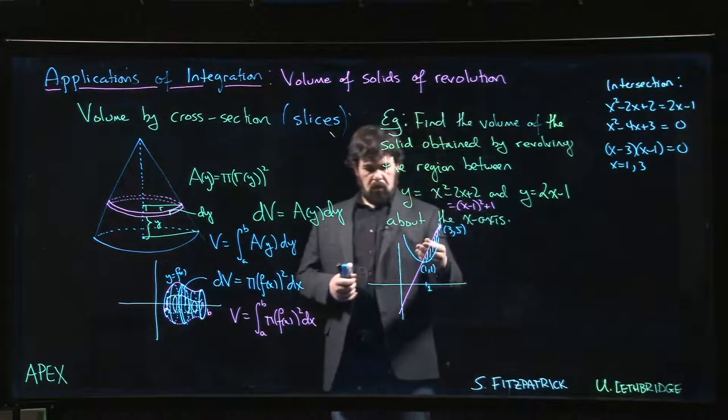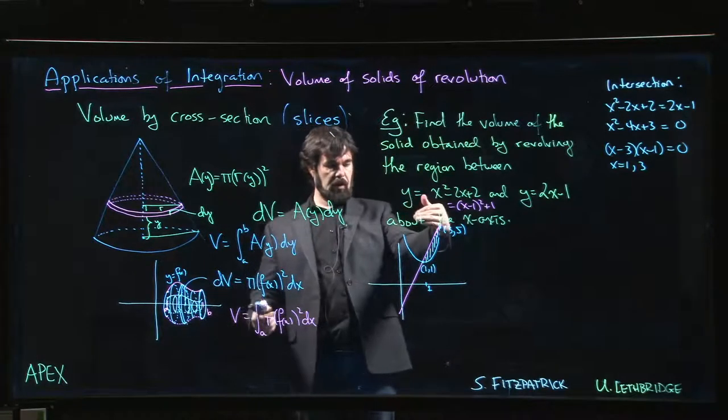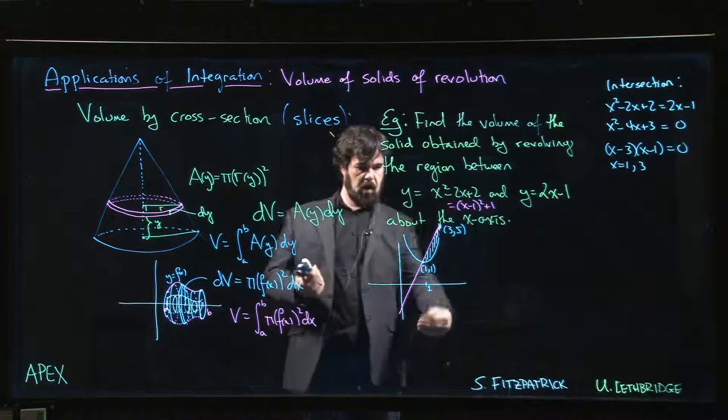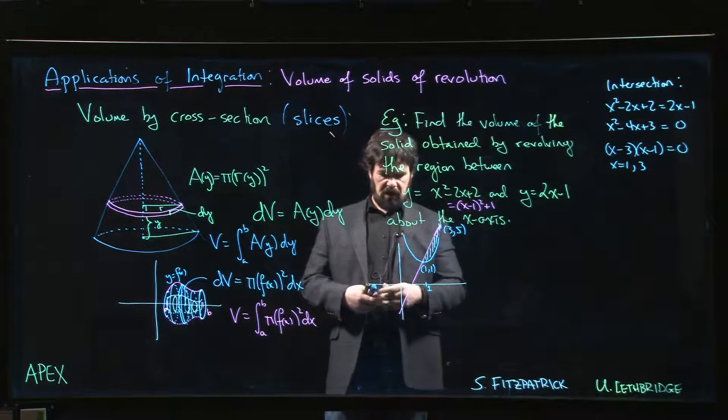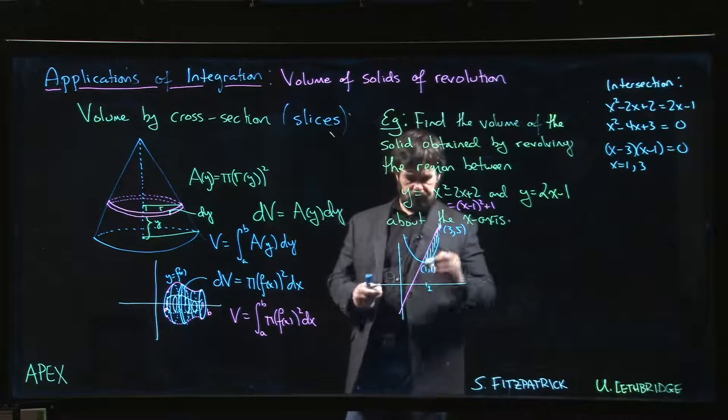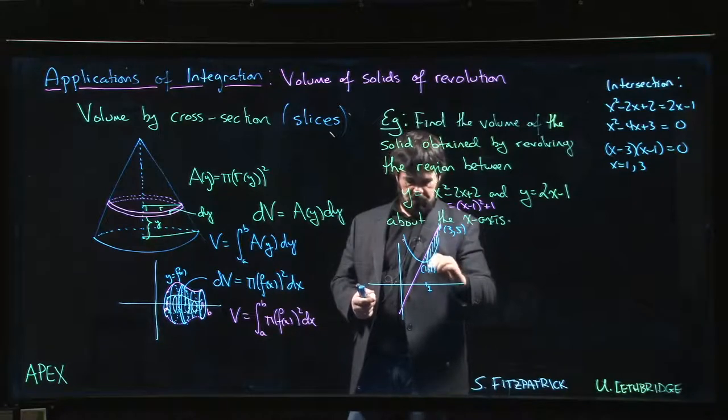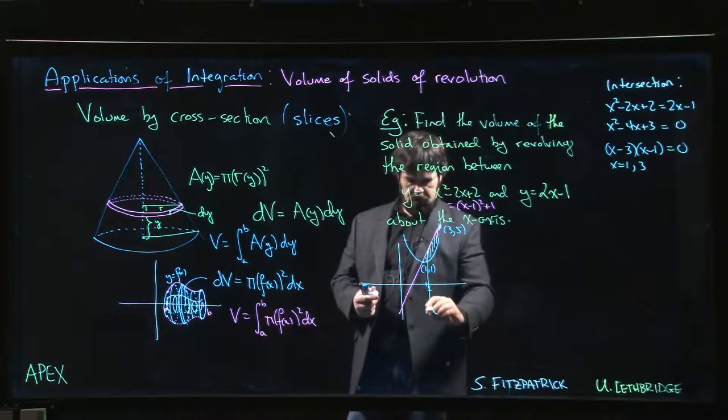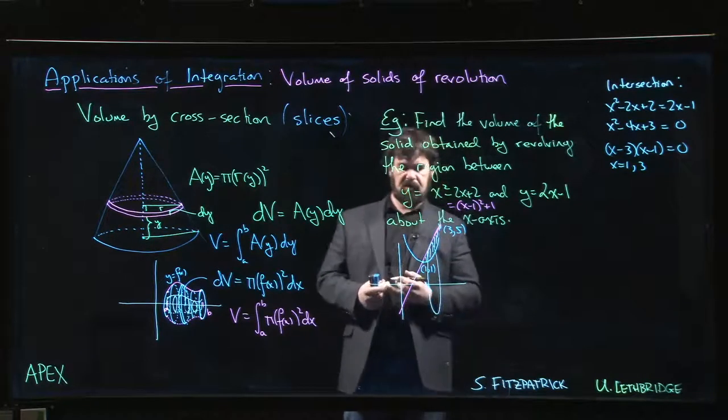And so what this ends up being is essentially the outer curve, or the upper curve is going to determine the outer radius, and then the lower curve determines an inner radius. So if we had just the red curve, it would revolve around and we get a disk, like so.